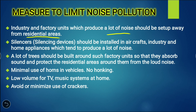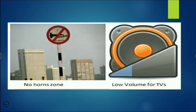We should avoid or minimize the use of crackers as much as possible. If you do use crackers, minimize their use — this will prevent both noise pollution and air pollution. As shown in the examples, no-horn zones and low volume for TVs — where horn use is not required, we should not honk. Use TV and music systems only at the volume that is needed.